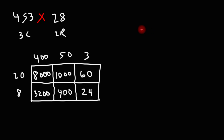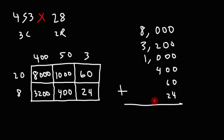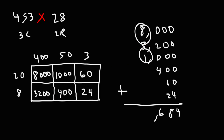So now let's add these numbers. We have 8,000 plus 3,200, then 1,000, next is 460, and 24. In the first column all we have is 4. For the second column, 6 plus 2 is 8. For the third column, 2 plus 4 is 6. And then for the last column we have 8 plus 3 is 11, plus 1, that's 12. So our answer is 12,684.